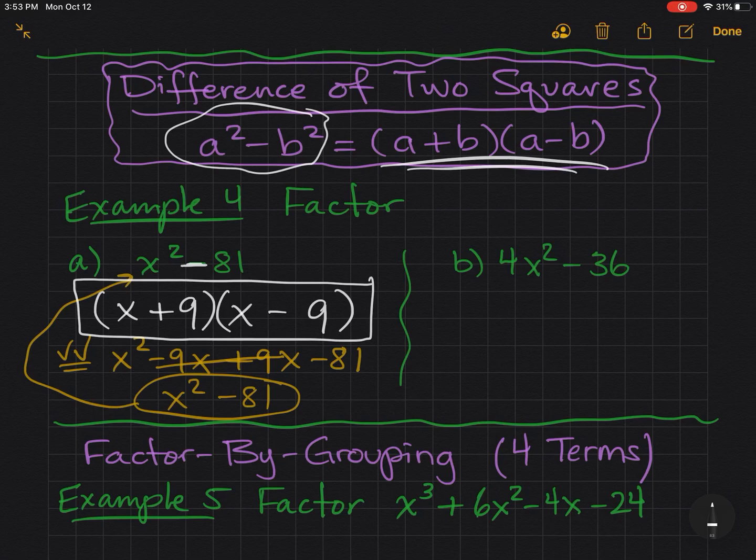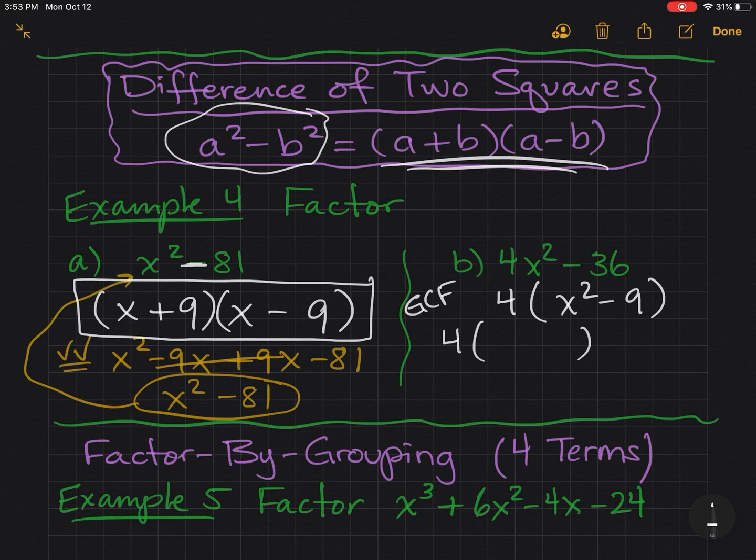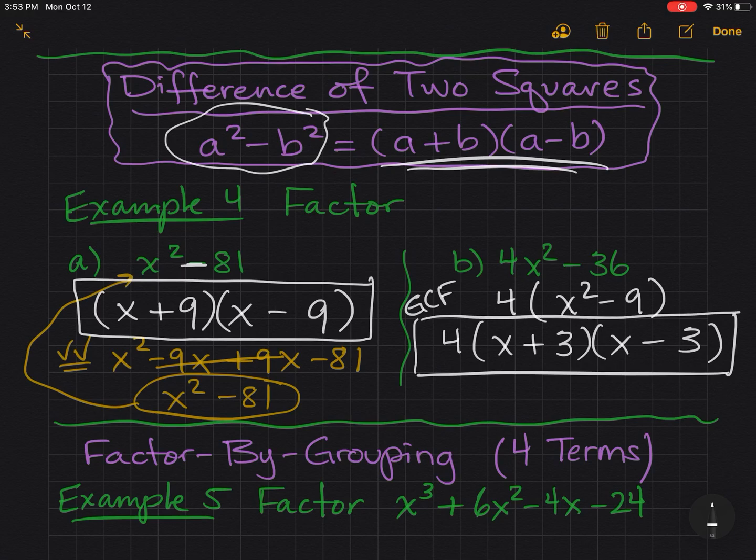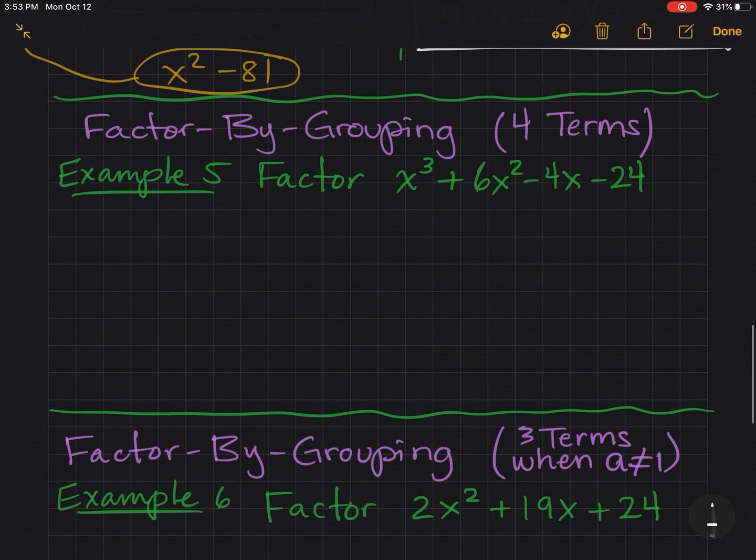Pause your screen and try part B on your own. Okay. So hopefully, you factored out the GCF first, which is 4. And you got x squared minus 9. You recognize your two terms were both perfect squares. So I set up my parentheses. The square root of x squared is x. And the square root of 9 is 3. Make one positive, one negative. So we have 4 times x plus 3, x minus 3. If you ever factor out a GCF, you have to remember to put it out front.